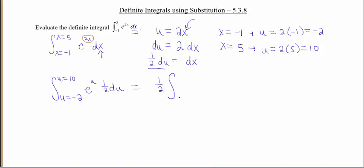We now know everything's in terms of u's, so I'm just gonna write negative 2 to 10, e to the u, du.